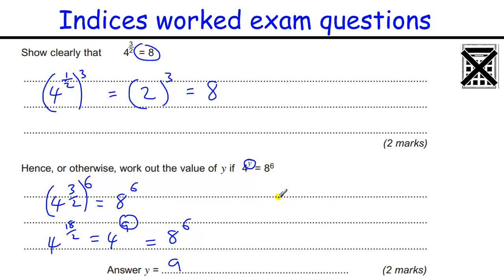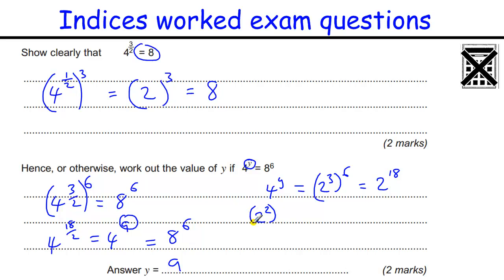Alternatively, using base 2: 4 to the y equals 2 cubed to the power of 6, which is 2 to the 18. And 4 to the y is 2 squared to the y, which is 2 to the 2y. So 2y equals 18, giving y equals 9.